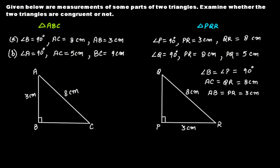We have two right angles equal, the hypotenuse AC equals the hypotenuse QR, and a corresponding side equal. So the RHS congruence criterion is satisfied — yes, these two triangles are congruent.